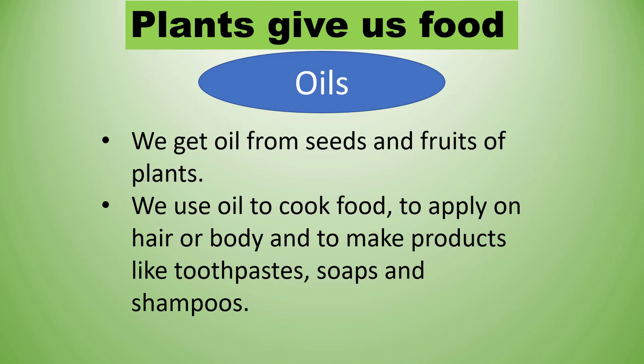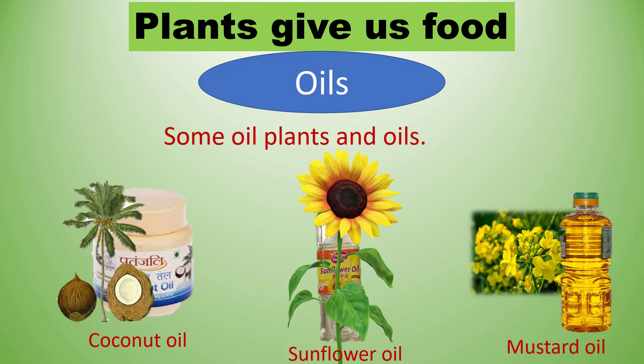Next we will discuss about oils. We get oil from seeds and fruits of plants. We use oil to cook food, to apply on hair or body, and to make products like toothpaste, soaps, and shampoos. We can see some pictures of coconut oil, sunflower oil, and mustard oil.